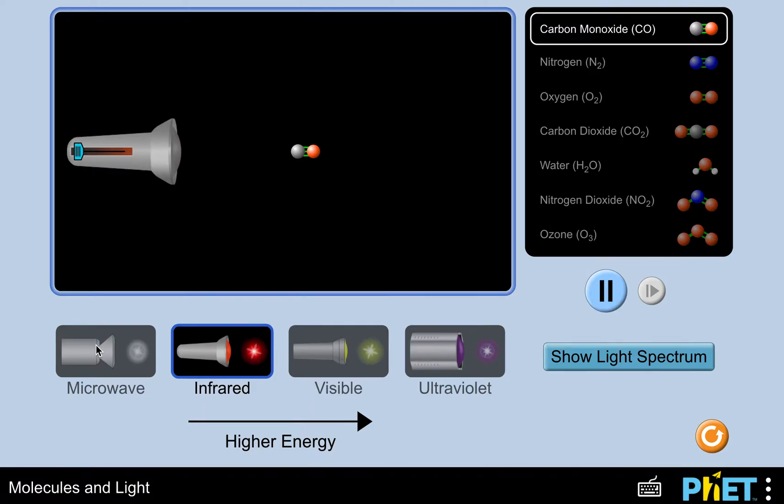So you can see in the simulator there are four different kinds of particles we can make. We can make microwave that we talked about last time, we can make infrared which is the default start here of the simulator, we can make visible light and we can make ultraviolet light.